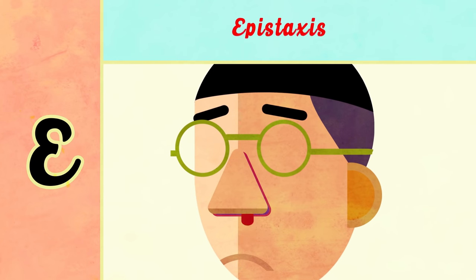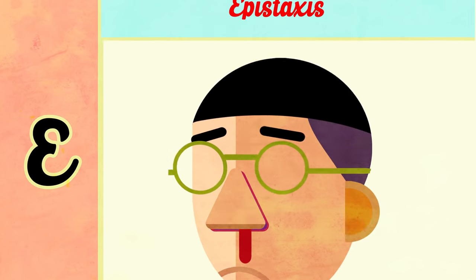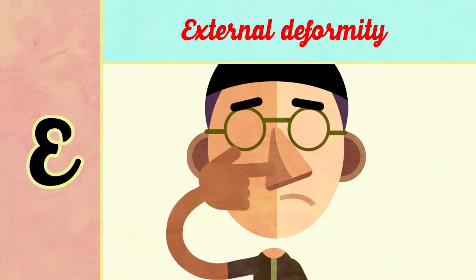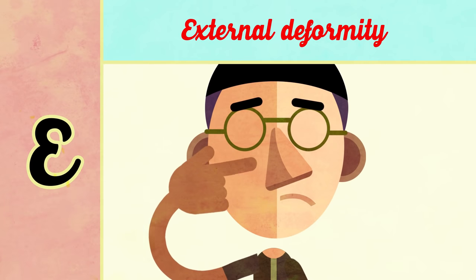E is for epistaxis. Another E is for external deformity, which is particularly noticeable in young females or males who are more conscious of their appearance.